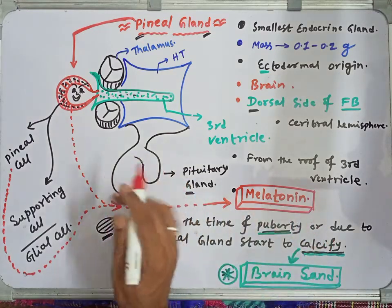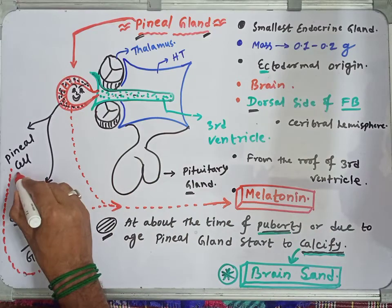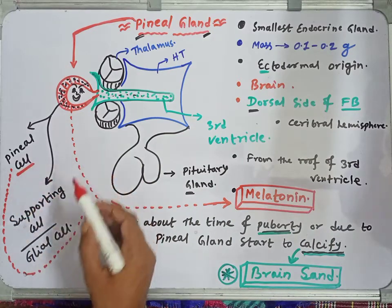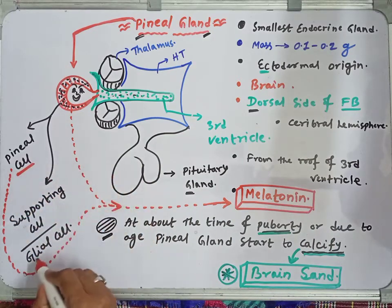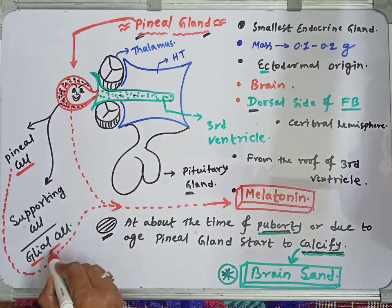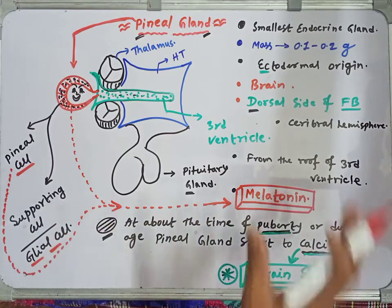So to summarize: the pineal gland has pineal cells and supporting cells — the glial cells. The pineal cells produce melatonin, the hormone of the pineal gland.